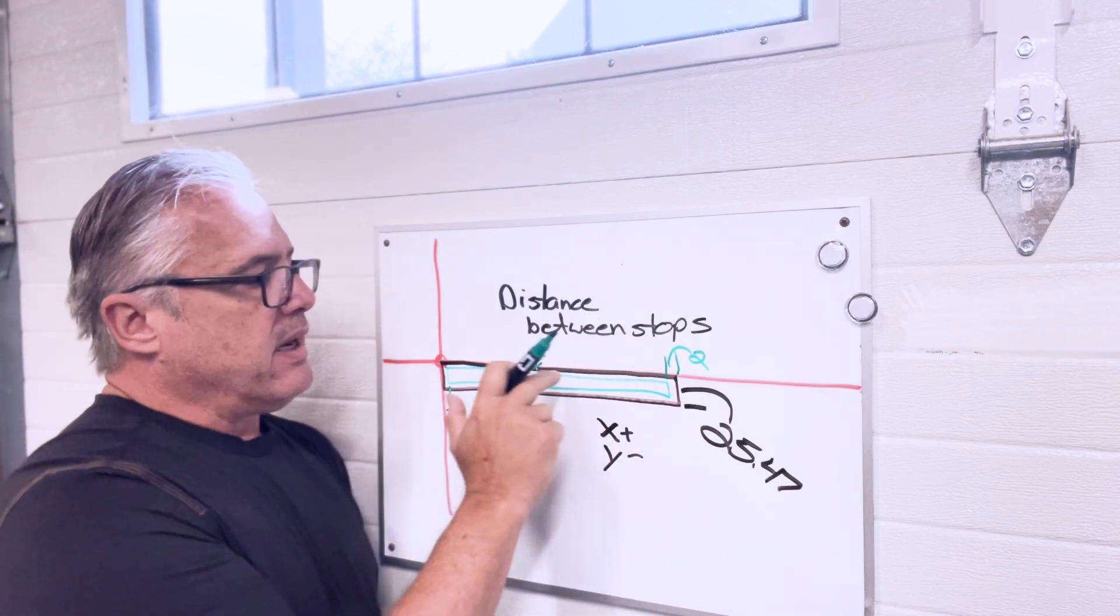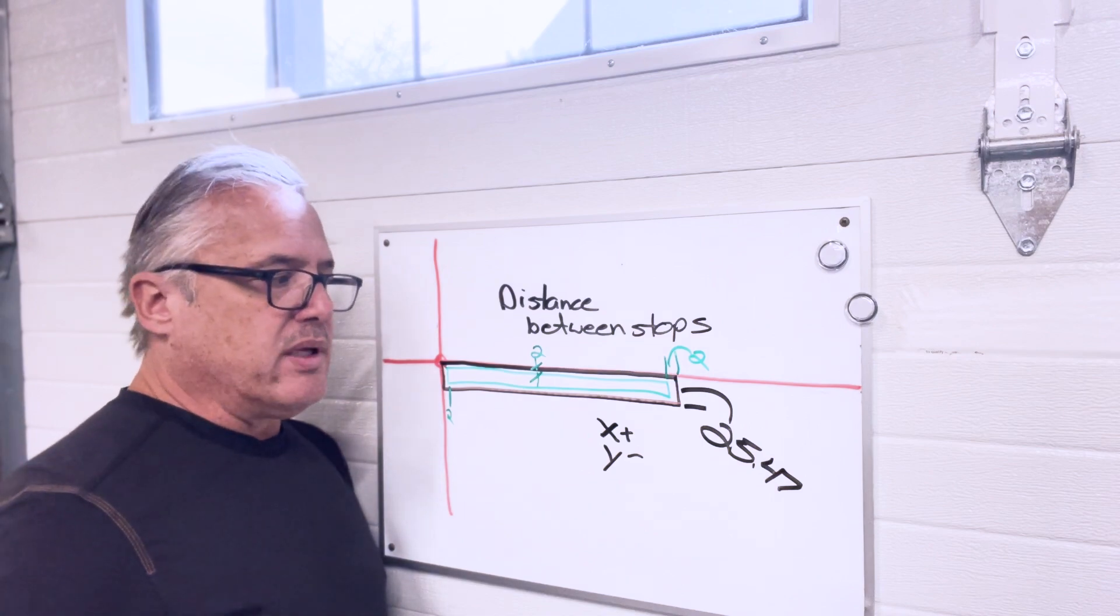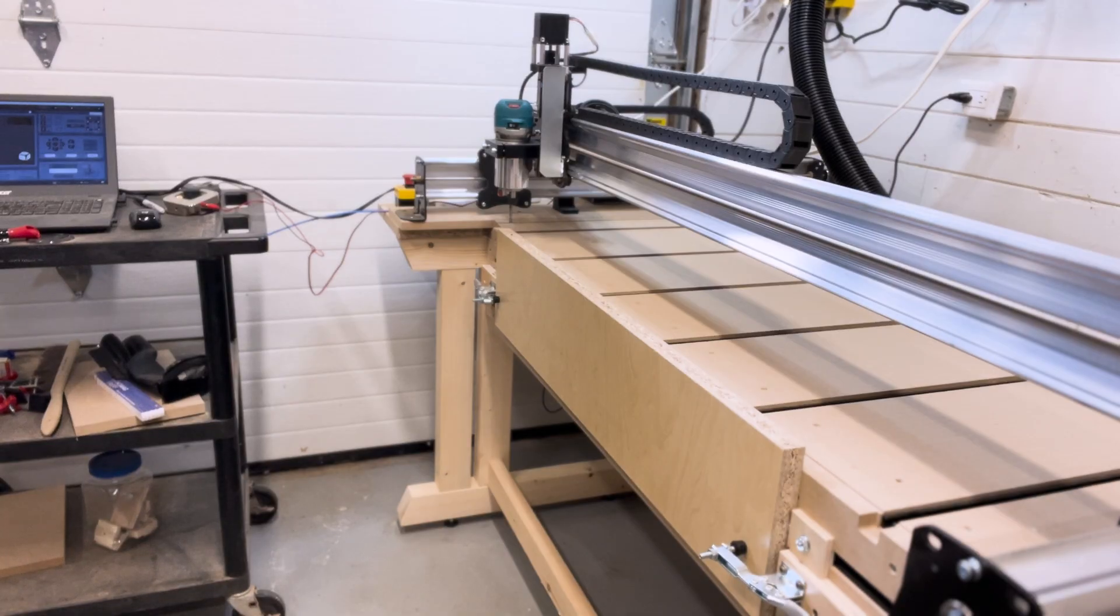This is why I always want to make sure I'm using the proper reference edges when I'm doing the machine. Now in this case, when I run this, I will have the dust collector off just to reduce the amount of noise that we have. So now we are going to run the component.